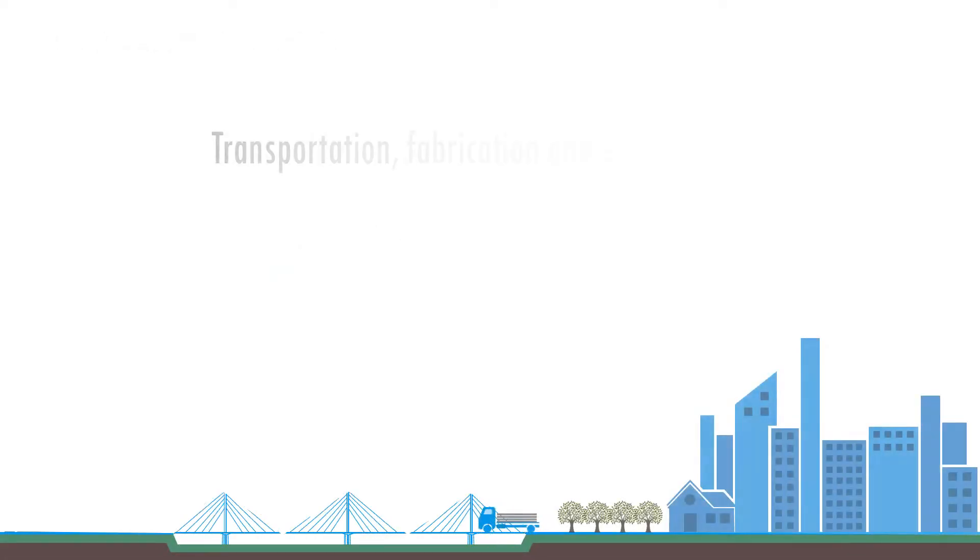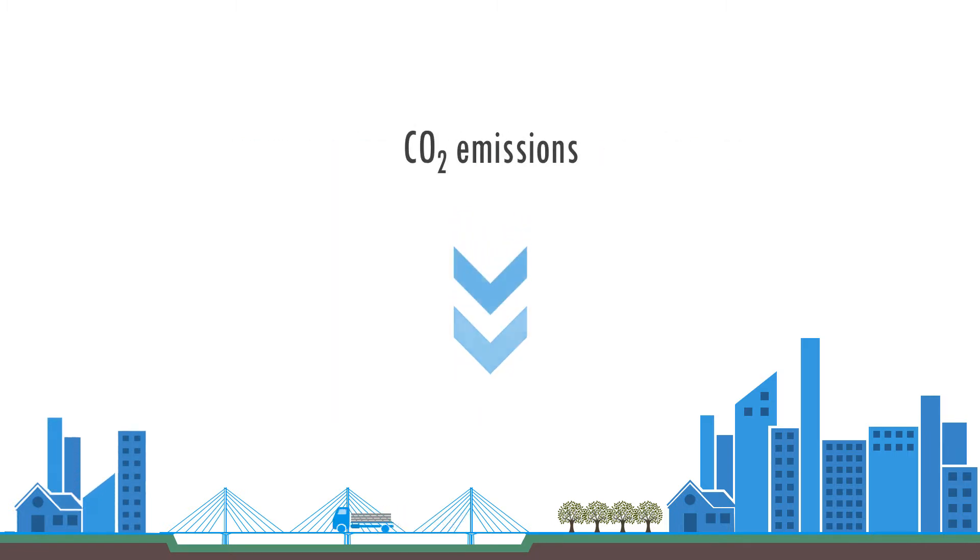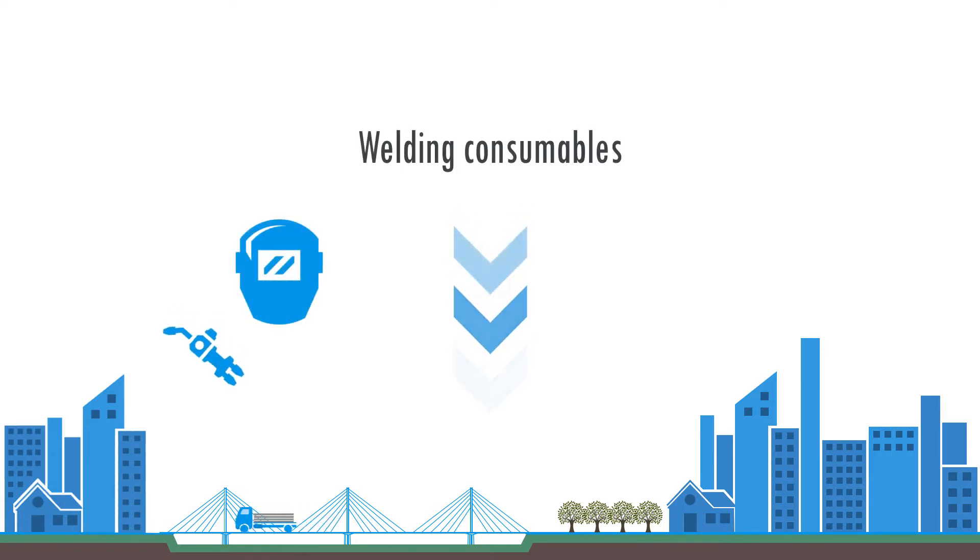Using less steel also reduces the costs associated with transportation, fabrication and erection. Thinner sections require lower volumes of weld metal and associated welding consumables.